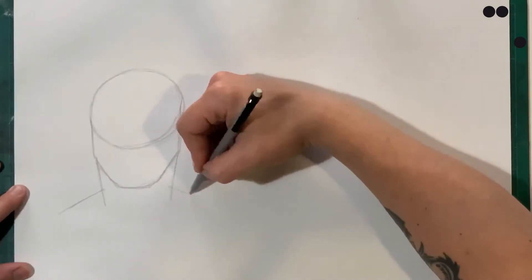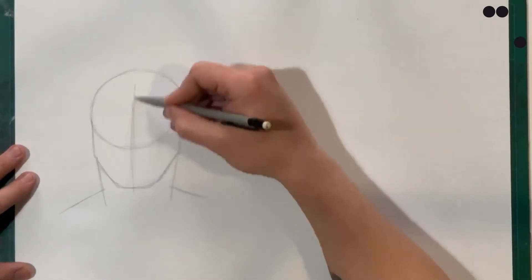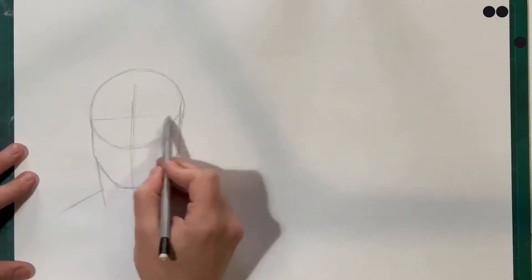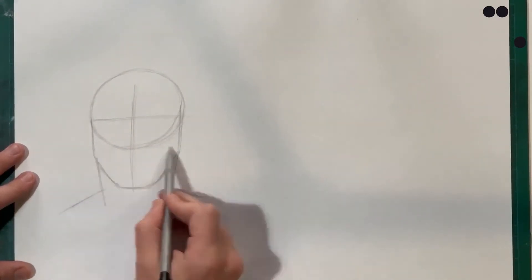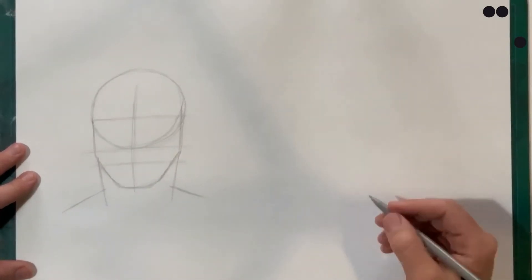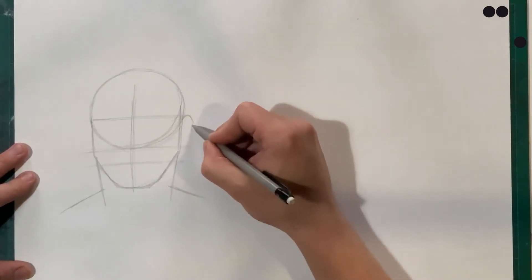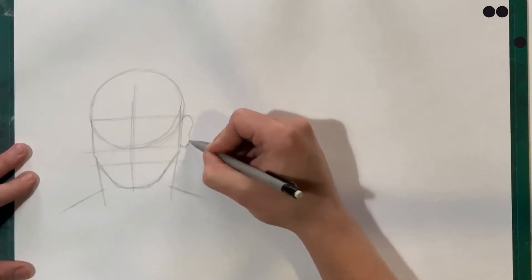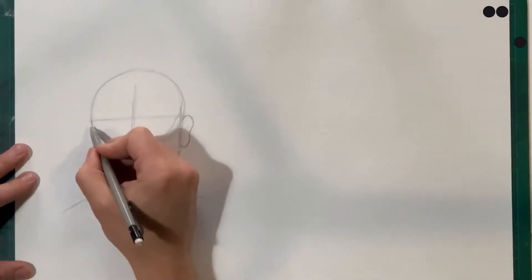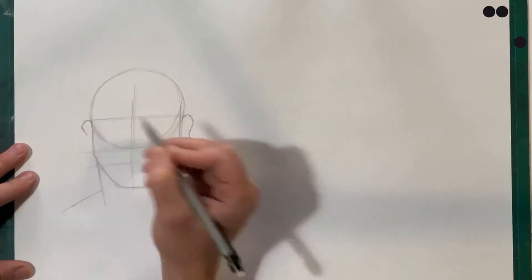Off of that we add a neck and some shoulders just to ground this person that we are drawing here, and from there we add a center line down the face. This helps just line everything up, and then across that circle that we drew we're going to do a cross line. This is where the eyes are going to sit. At the bottom of the circle is another line - this is where the nose will sit, and then in between the nose line and the bottom of the jaw we're going to draw another line which is where the mouth sits.